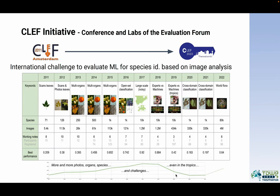In order to evaluate machine learning methods for image-based plant species identification, we have conducted since 2011 an international challenge in the context of the CLEF initiative, which allows us each year to compare some of the best methods that could be used for plant species identification. Each year we try to increase the difficulty of the task proposed in the challenge, which has allowed us to measure the progression of machine learning techniques for such tasks.